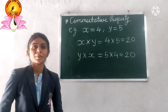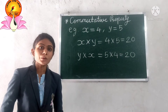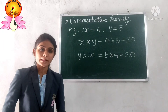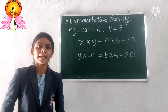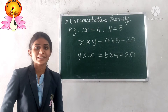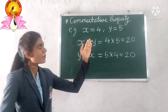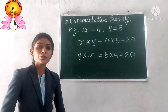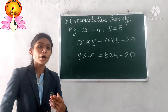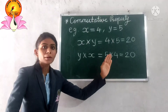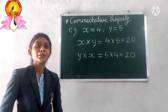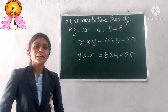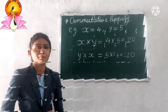Next, the commutative property. If we multiply two whole numbers x × y or y × x, both answers will be the same — they are equal to each other. For example, x = 4 and y = 5. If we multiply 4 × 5 we get 20, and if we multiply 5 × 4 we also get 20. So they are equal to each other, and the commutative property is satisfied by multiplication.